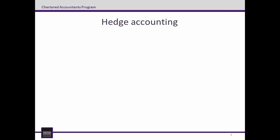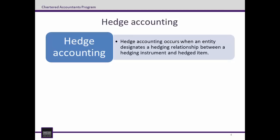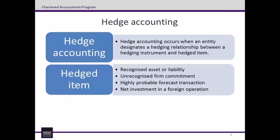Now that we've introduced hedging, it's time to look at hedge accounting. Hedge accounting occurs when an entity designates a hedging relationship between a hedging instrument and a hedged item. An eligible hedged item must be a contract with an external party and can be one of four things: a recognised asset or liability; an unrecognised firm commitment — that is, a binding agreement with a specific quantity, price, and date; a highly probable forecast transaction; or a net investment in a foreign operation.